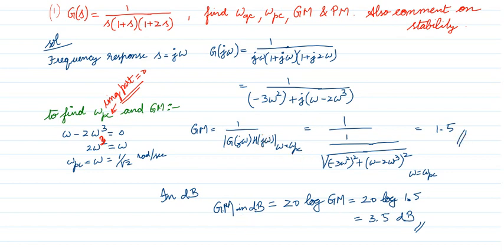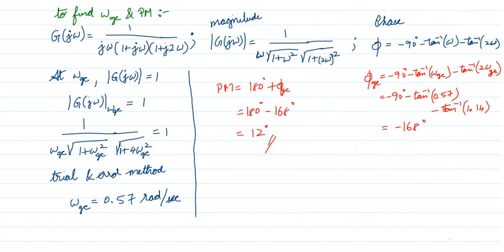If the gain margin in decibels is required, take 20·log(gain margin) = 20·log(1.5) = 3.5 dB. So we found the phase crossover frequency by equating the imaginary part to zero, substituted into the magnitude formula, and took 1/magnitude to get gain margin = 1.5 (or 3.5 dB).